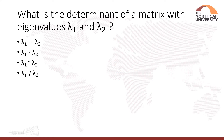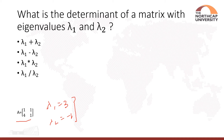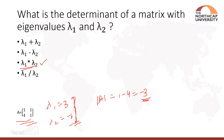The next question is: what is the determinant of a matrix with eigenvalues λ1 and λ2? Using our example where the matrix A had eigenvalues 3 and −1, the determinant of the matrix is 1 − 4 = −3. This equals 3 × (−1) = −3, so the determinant equals λ1 × λ2, the product of the eigenvalues.